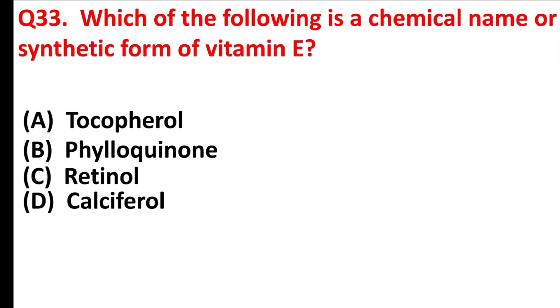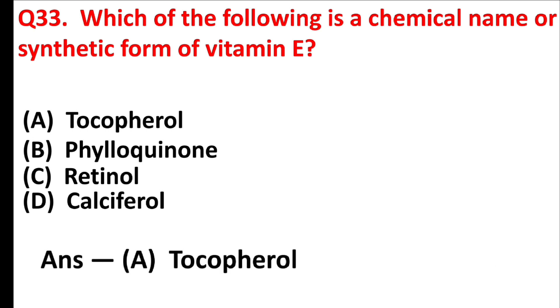Which of the following is the chemical name or synthetic form of vitamin E? Answer is Option A: Tocopherol.